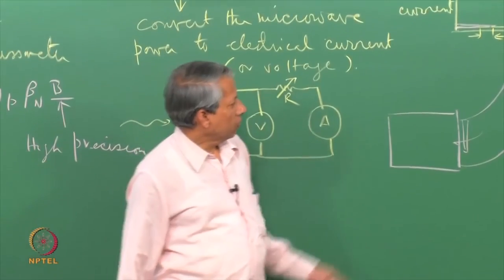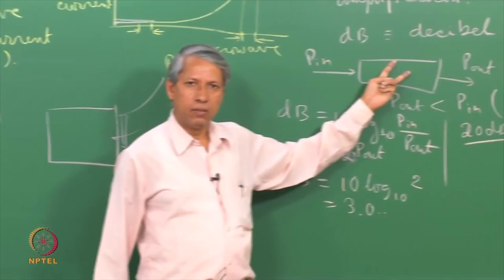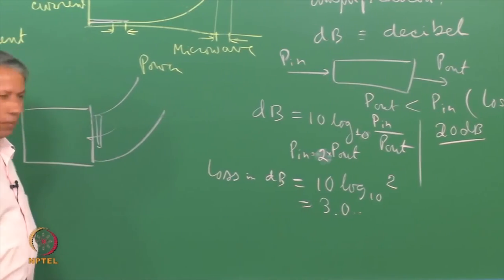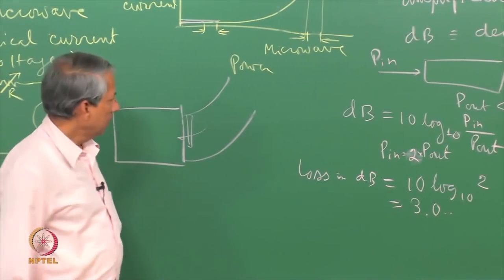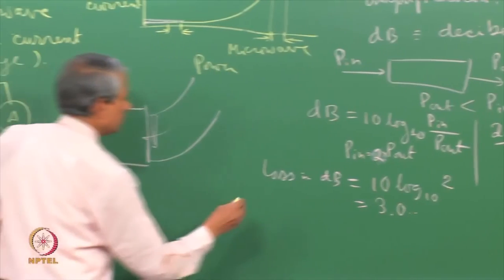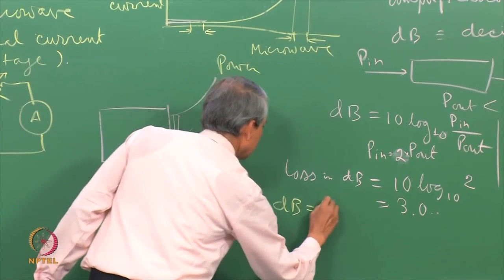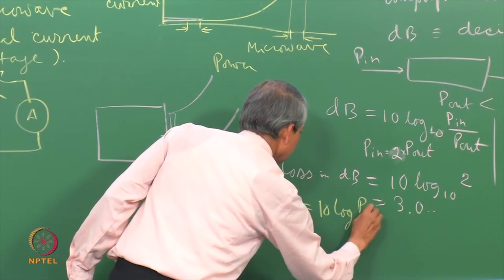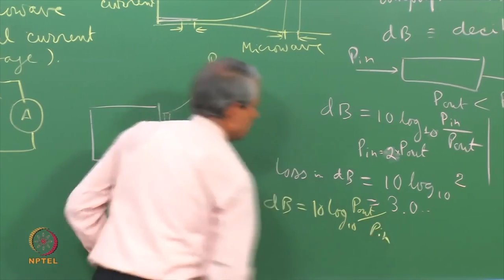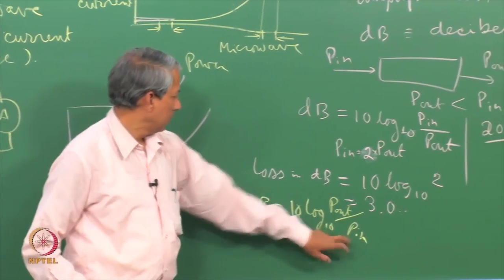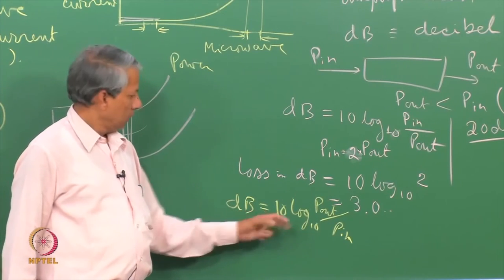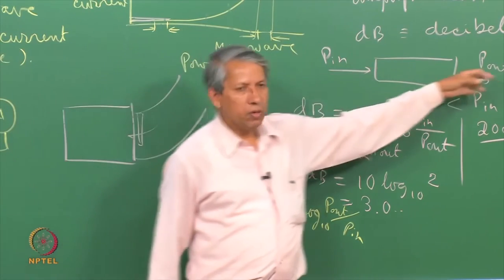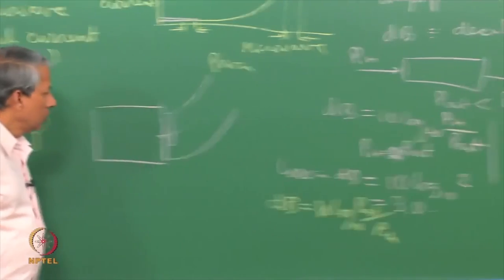Suppose instead of loss there is some device which amplifies the signal, power goes in and comes out higher than that. The same way I can define the amplification factor here in terms of dB. Here this is higher than that. Again if it is 20 dB, the ratio will be 100, that is if 1 milliwatt goes in, 100 milliwatt comes out. The amplification is 20 dB.